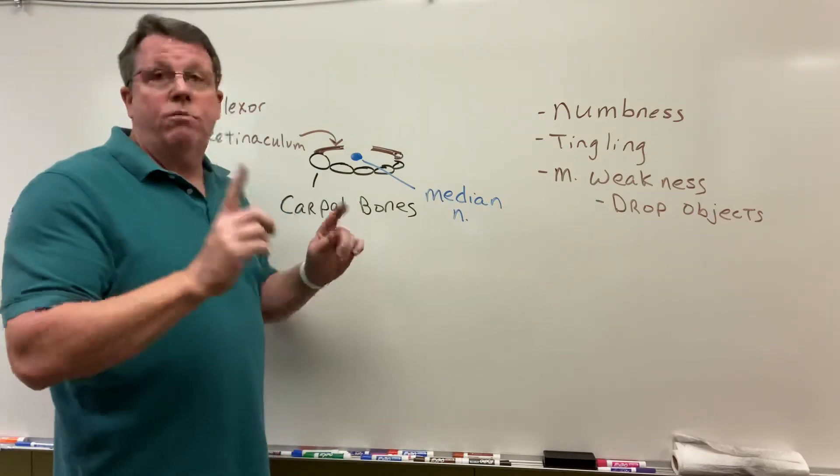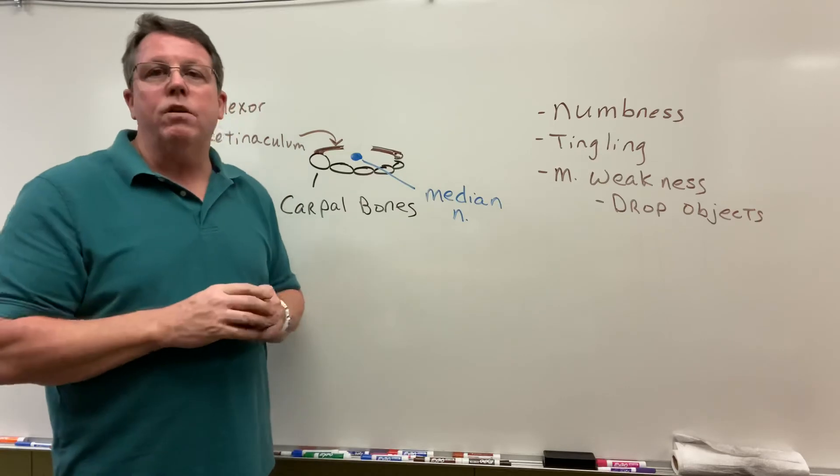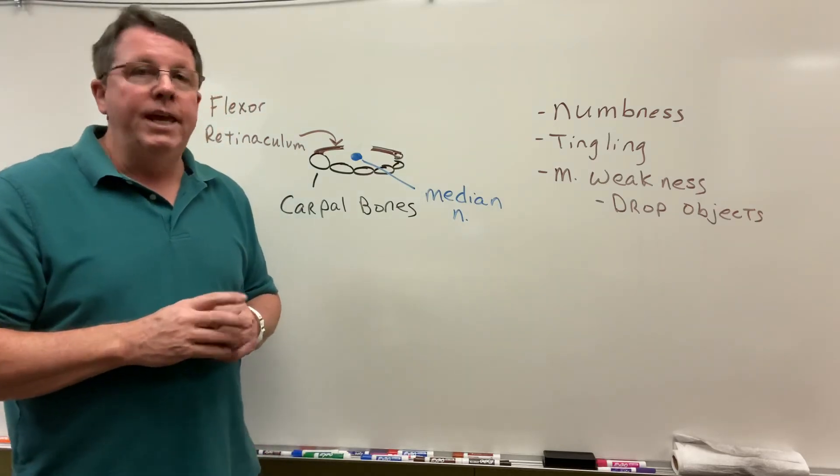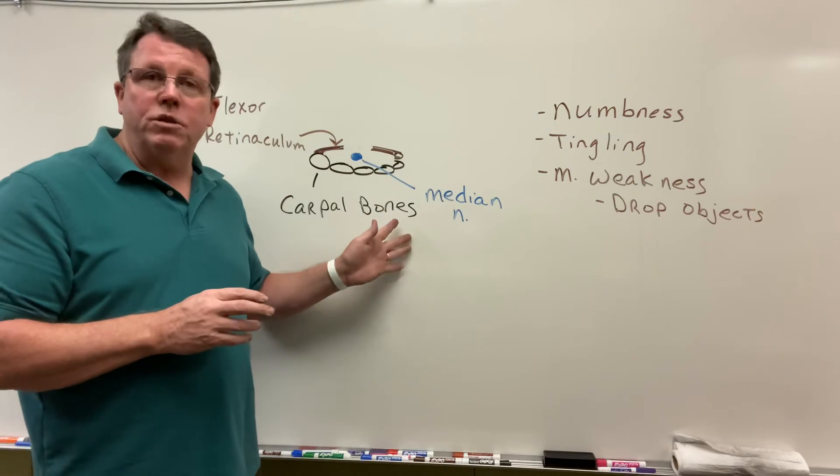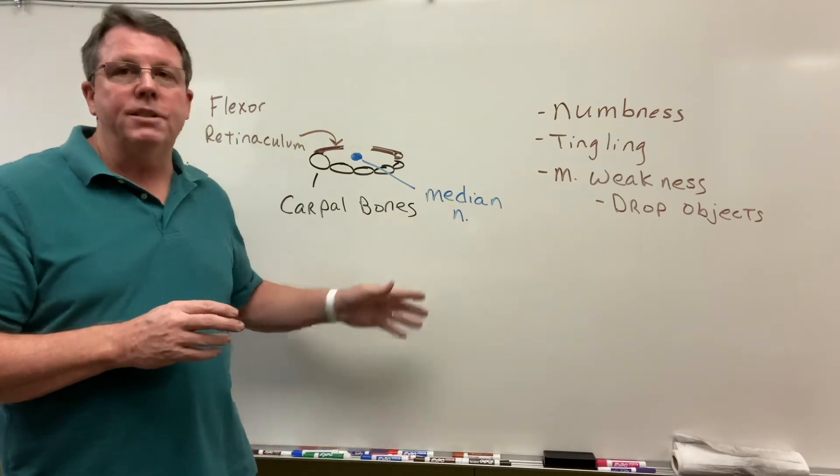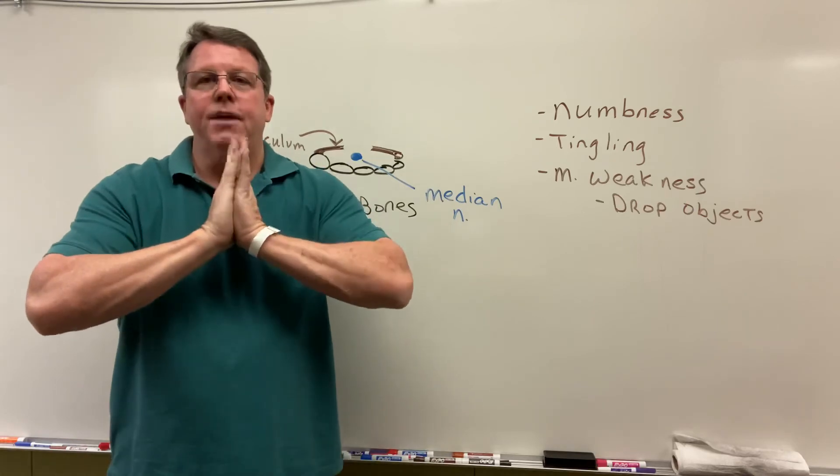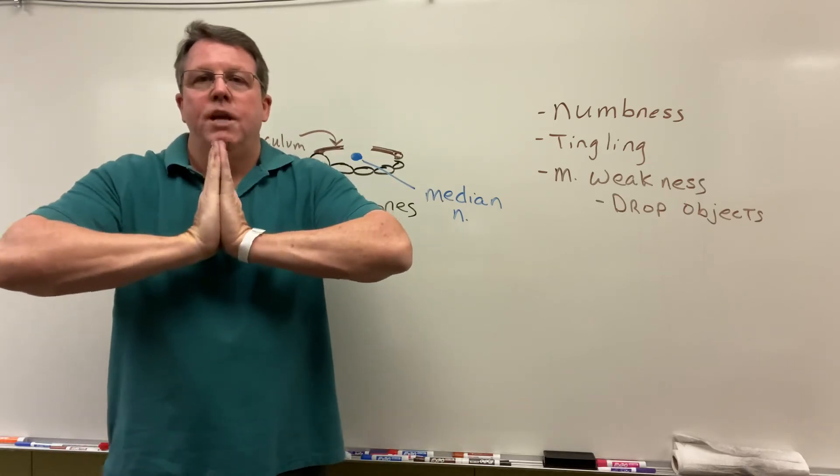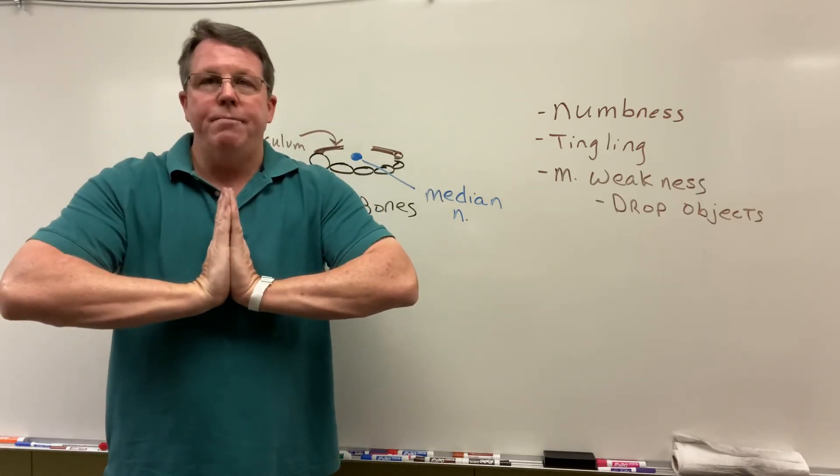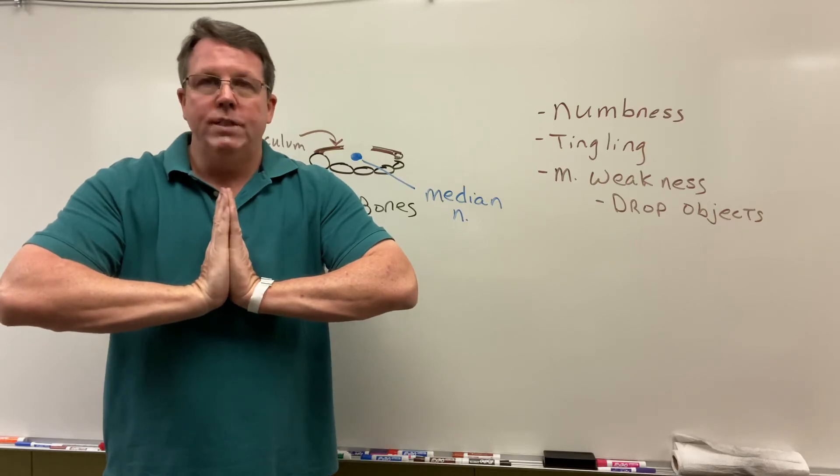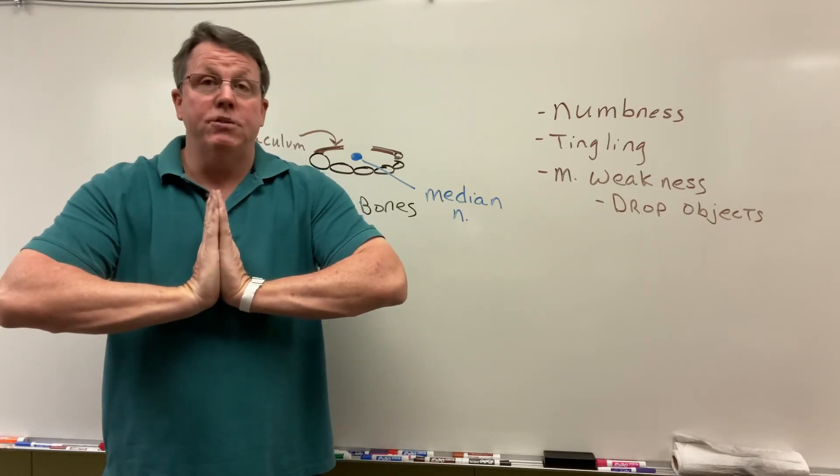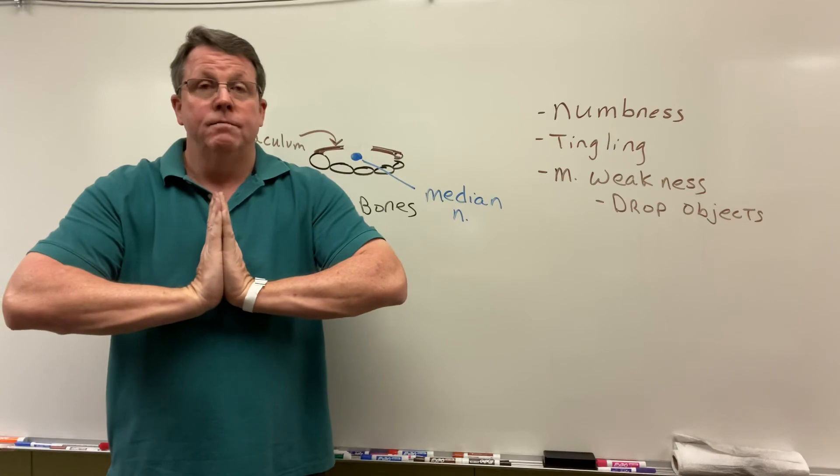There are two signs we're looking for with carpal tunnel syndrome. The first one is the prayer sign: you put the palms of the hands together, put the fingers together, and let the wrist go down just a little bit. After about 30 seconds, they should start to feel some numbness or tingling in the hands, or at least in one hand.